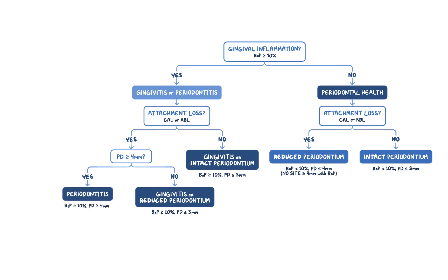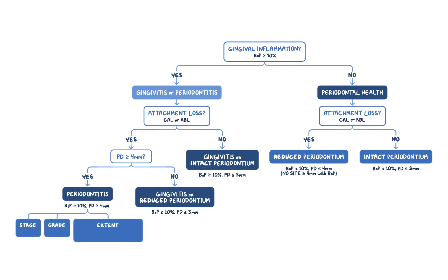If there is a probing depth of 4 mm or higher with bleeding, this is no longer a gingivitis case — this is a periodontitis case. Once you arrive at the diagnosis of periodontitis, you have stage, grade, and extent to describe further. Staging is from 1 to 4, grading is from A to C, and extent includes generalized, localized, and molar incisor pattern.